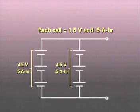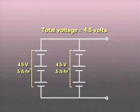Now to get the total for the entire configuration, we apply the parallel rules. Since voltages in parallel are not additive, our total voltage rating is the same, 4.5 volts.